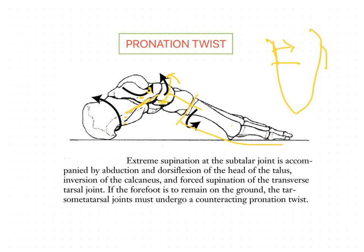The pronation twist and the supination twist of the tarsometatarsal joints occur only when the transverse tarsal joint function is inadequate — that is, when the transverse tarsal joint is unable to counter-rotate, or when its range is insufficient to fully compensate for hindfoot position. Only then do the supination and pronation twists take place; otherwise these twists are not common.